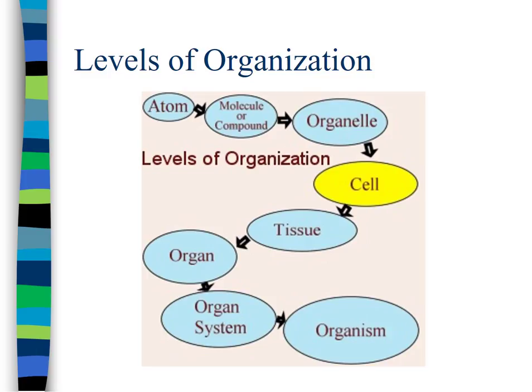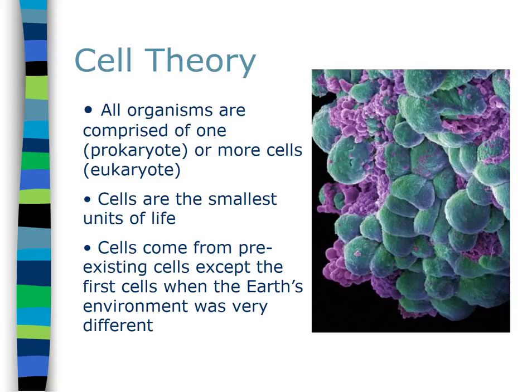That is a property we call emergent. Now let's talk about cell theory, which consists of three parts. The first part says all organisms are comprised of one or more cells. Single-celled organisms can be both prokaryotes and eukaryotes. Most eukaryotic organisms are multicellular, although there are many unicellular eukaryotic organisms.